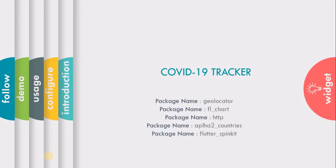These are the packages that we will be using in our app. First is Geolocator, which is used for getting the location of our device. Second is FL Chart, which is the package we will be using for creating different types of charts like pie chart and bar chart to show your data graph-wise. Third is HTTP, which will help you to create a network request and to fetch and display that data.